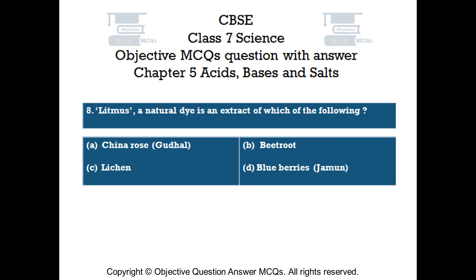Question number 8. Litmus, a natural dye, is an extract of which of the following? Option A, china rose and guttel. Option B, beetroot. Option C, lichen. Option D, blueberries and jamun.